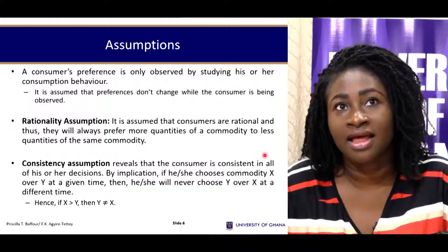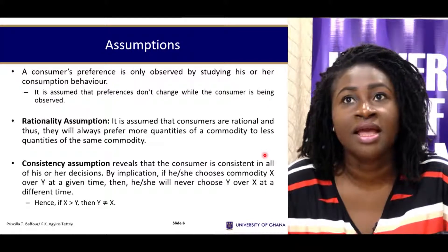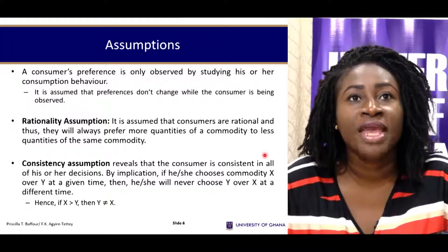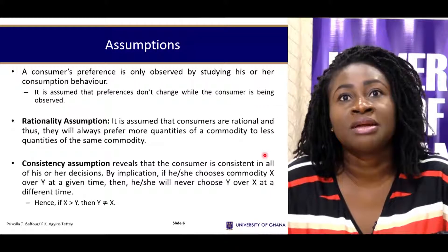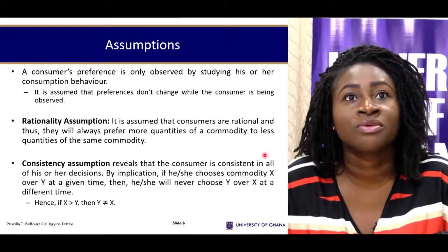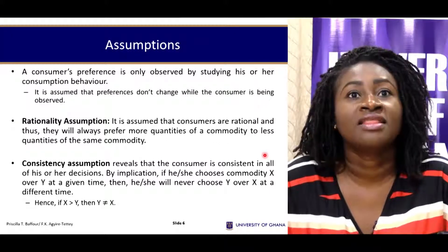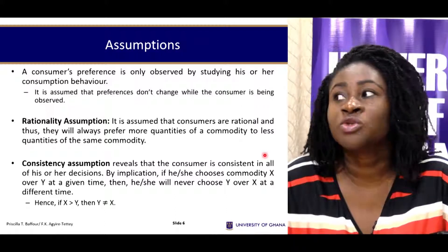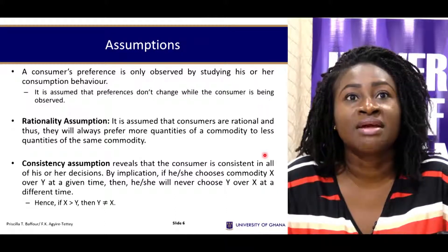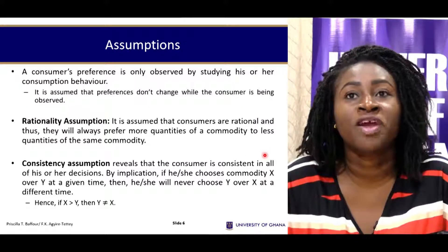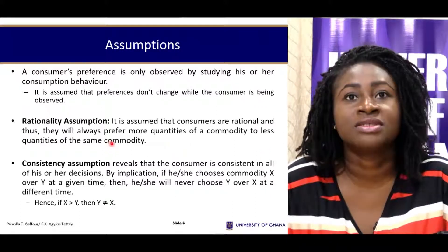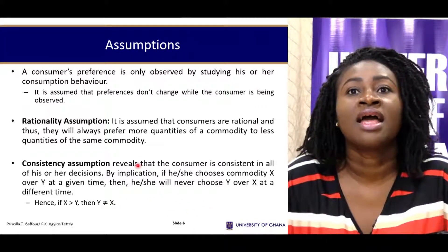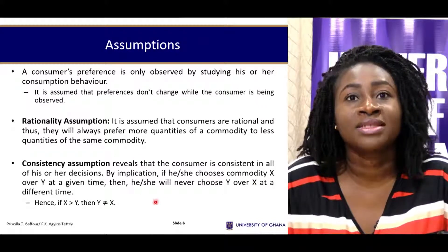Starting with the assumptions: a consumer's preference is only observed by studying his or her behavior. I cannot tell how you behave unless I study you. It is assumed that preferences don't change while the consumer is being observed, meaning there is some consistency. The rationality assumption is also made here — that consumers are rational and will always prefer more quantities to less of the commodity.